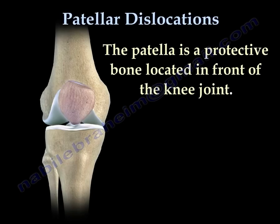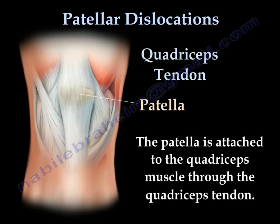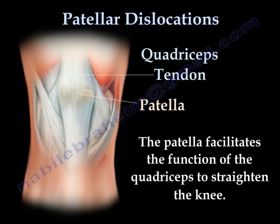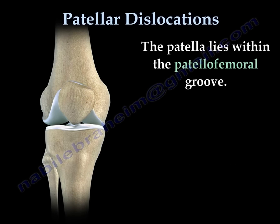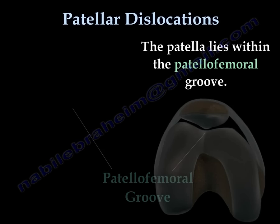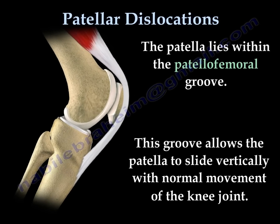The patella is a protective bone located in front of the knee joint. It is attached to the quadriceps muscle through the quadriceps tendon. It facilitates the function of the quadriceps muscle to straighten the knee. It lies within the patellofemoral groove, which allows the patella to slide vertically with normal movement of the knee joint.